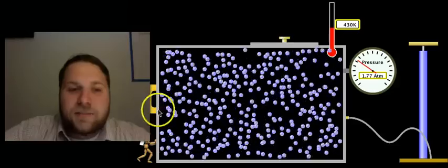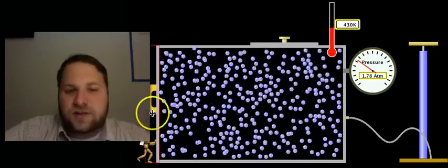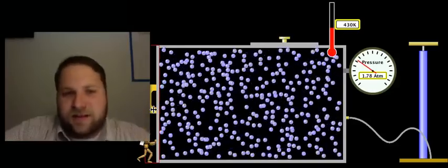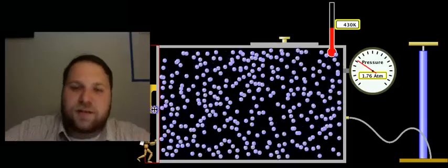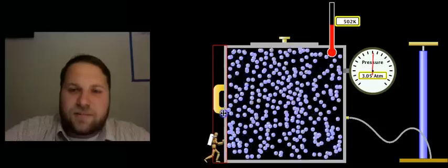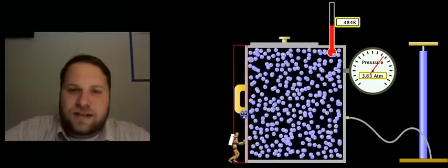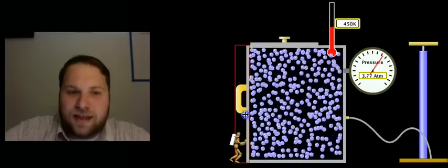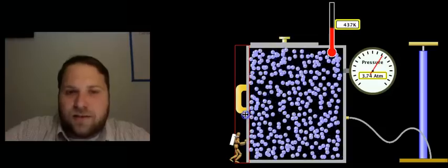As volume got bigger, pressure got smaller. Let's see if it works the other way. Let's decrease the volume and watch what happens to the pressure. As I decrease the volume, the pressure goes up. That is, I'm squeezing them in such a way that they hit the wall more often.